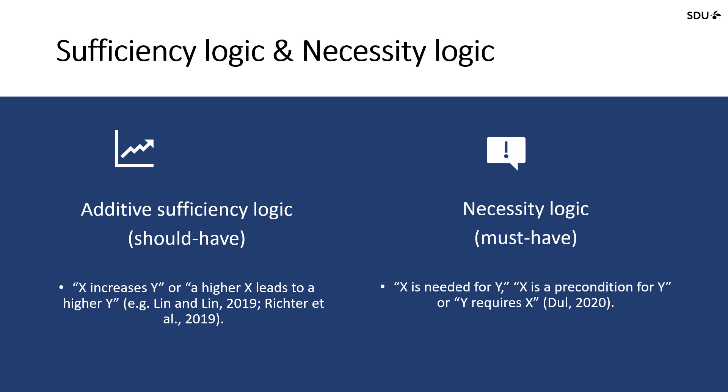By contrast, when applying NCA, we are using necessity logic. Necessity logic implies that an outcome or a certain level of an outcome can only be achieved if the necessary condition is in place or is at a certain level. For instance, an information system can only contribute to success in an organization if it is used. Researchers who refer to this logic use expressions such as x is needed for y, x is a precondition for y, or y requires x. The emphasis here is on the must-have factors.